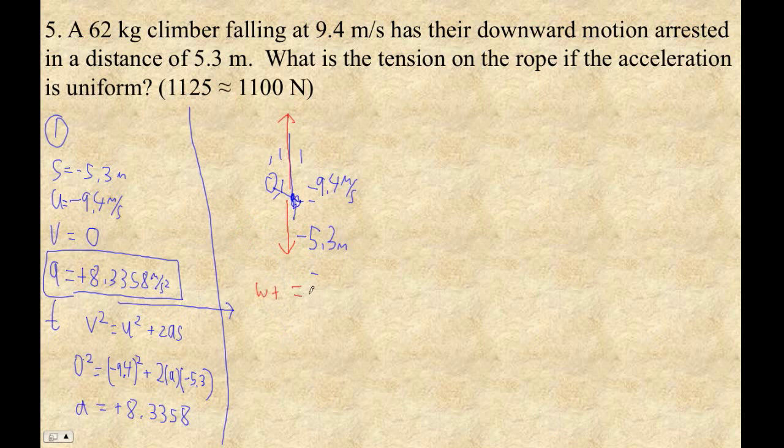The force downward is going to be the weight. And weight is mg. So that's going to be 62 kilograms times 9.81 newtons per kilogram. So 62 times 9.81 is 608.22 newtons. And that's going to be the downward force.